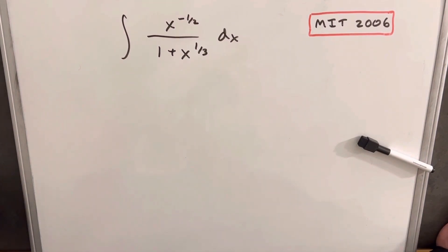Hey, we've got here another integral from MIT Integration Bee. This is from 2006. We have the integral of x to the minus one-half over one plus x to the one-third dx.